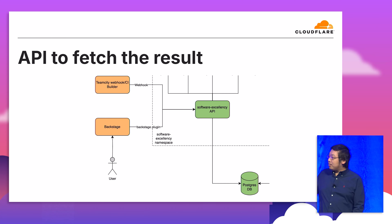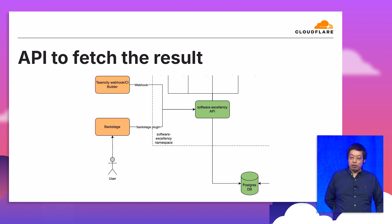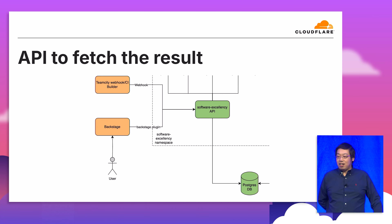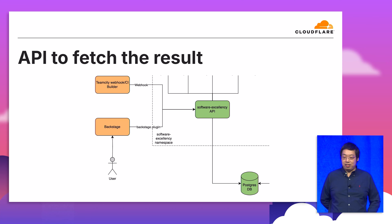After all the schedulers run and scores are calculated, the API reads the information from the database and responds to the dashboard to be shown to users. We also integrated this dashboard into Backstage, so users can go to one place to see all their scores and suggestions for their services.